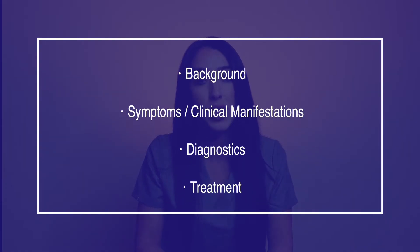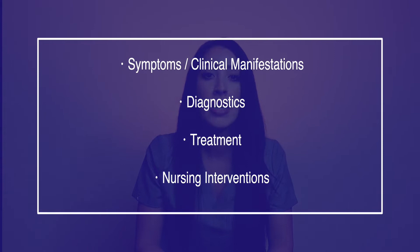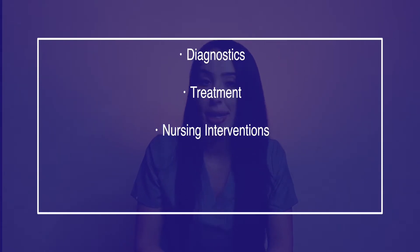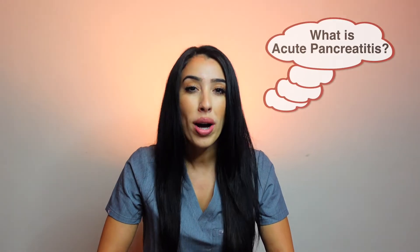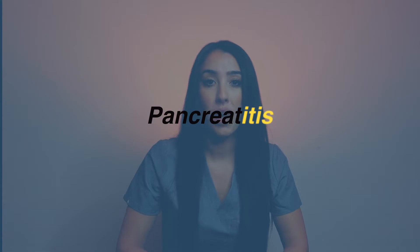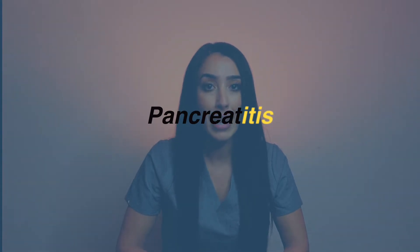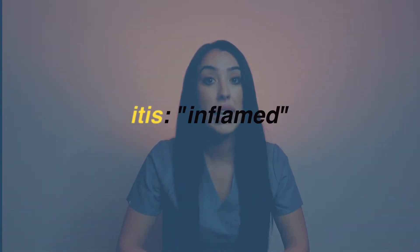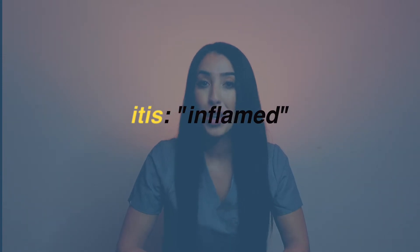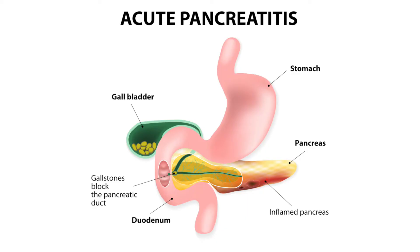I'll be going over the background, the clinical manifestations, the diagnostics, the treatment, and nursing interventions. So let's start off with the background. What is acute pancreatitis? Just by looking at the word we can think about '-itis,' which means inflammation. So acute pancreatitis is inflammation of the pancreas. The reason why this happens is due to an autodigestion effect.